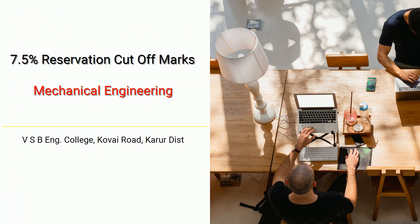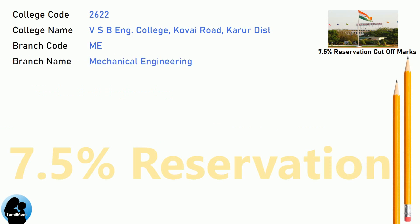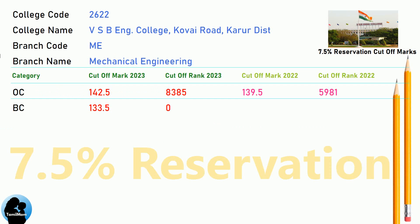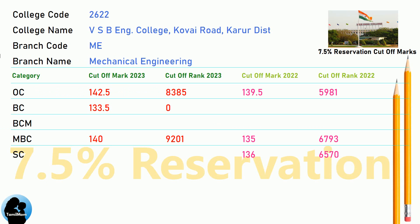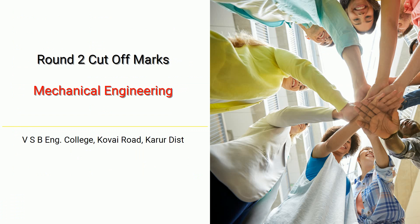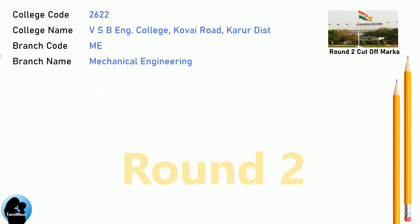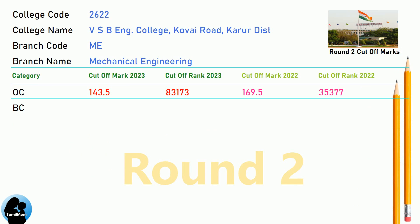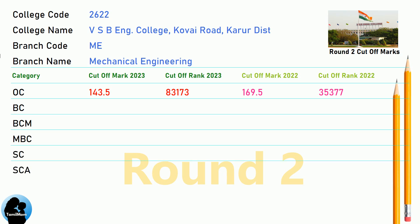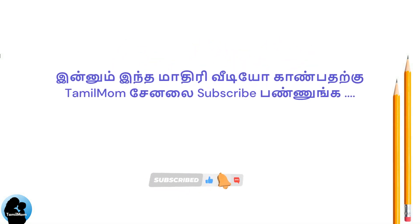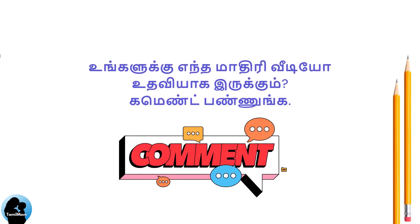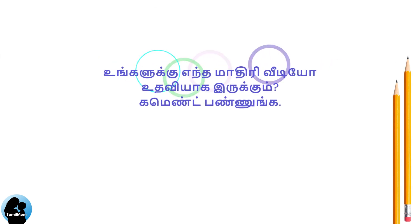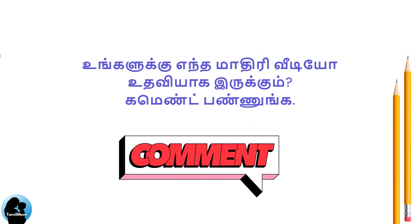DNA 7.5 Reservation Cut-Off for VSB Engineering College in Mechanical Engineering. DNA 8.5 Reservation Cut-Off for VSB Engineering College in Mechanical Engineering. Thank you.